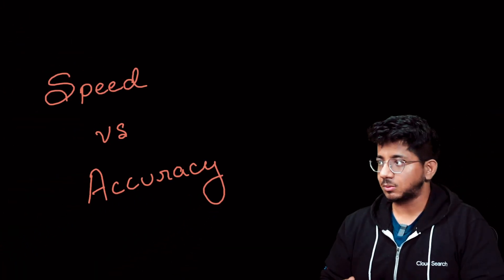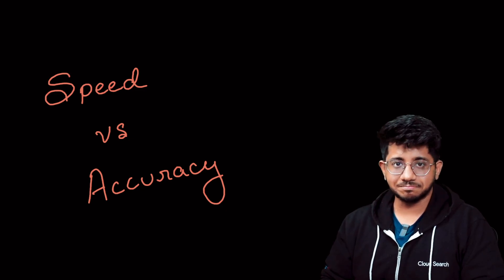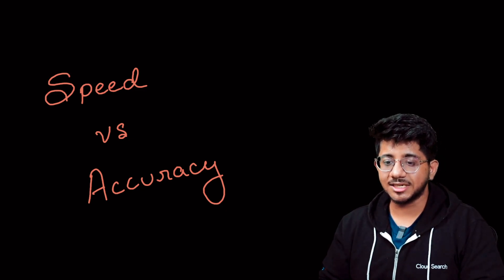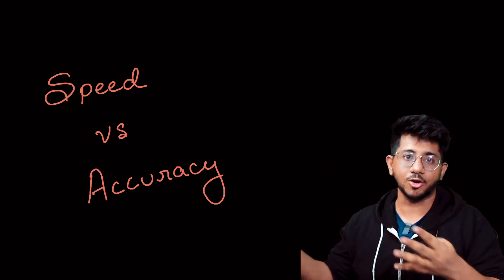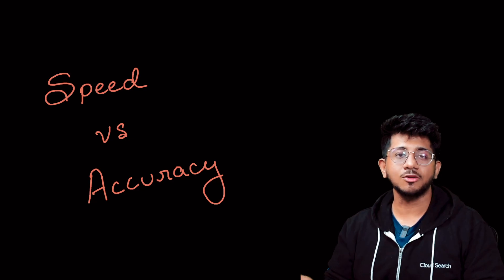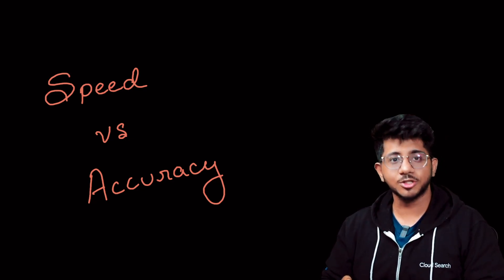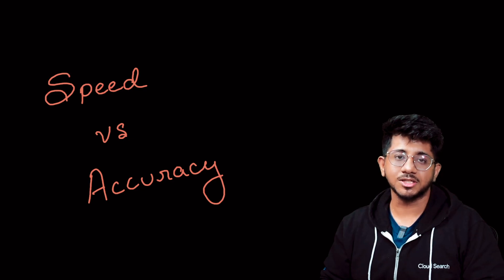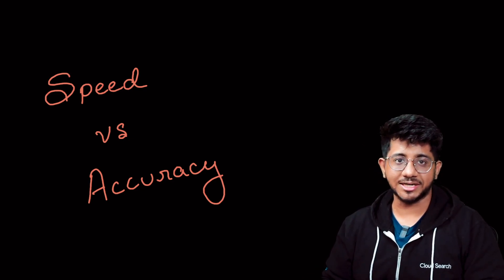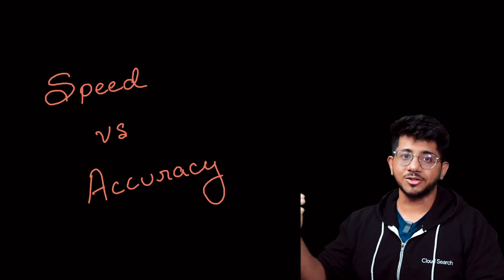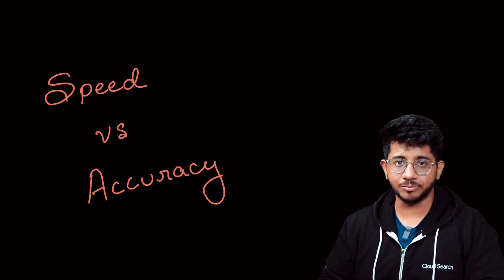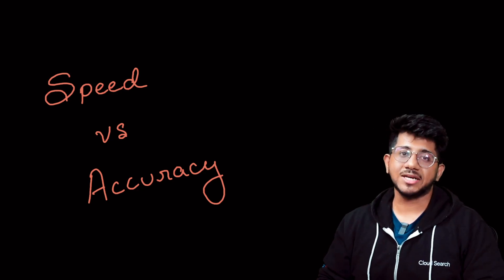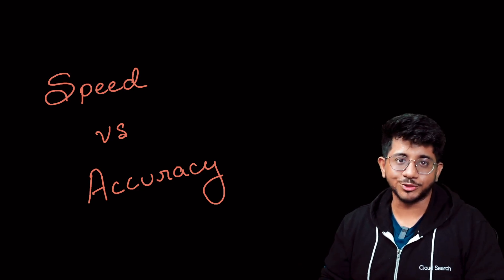So why are we even talking about this? Speed builds a lot of rating and consequently a lot of motivation at an early stage. When you can solve A and B problems on Codeforces at a good speed, you can easily reach 1200+ rating. A and B problems are generally implementation or some greedy strategies, so speed definitely comes with a lot of rating boost at the start.